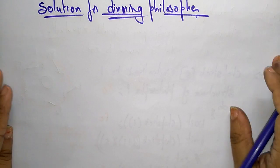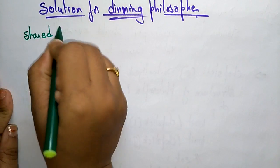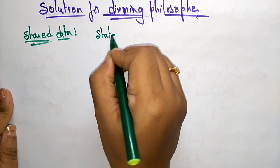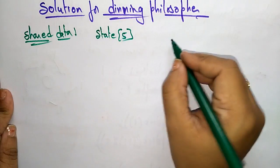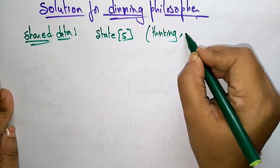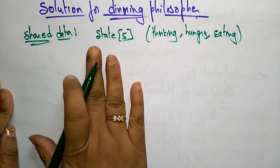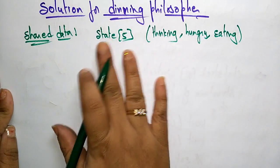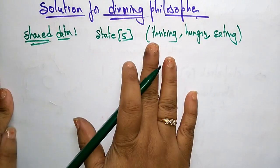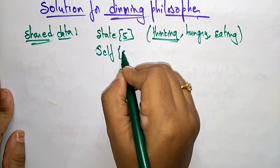I am taking the shared data because all philosophers are sharing the same food. For that shared data I am taking some variables. Let us take state[5] because there are five philosophers. Those five philosophers may be thinking, hungry, or eating — any of these three states. First, initialize all to thinking — all philosophers are thinking.